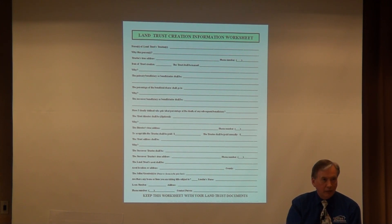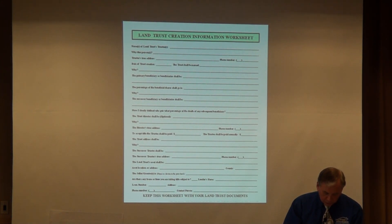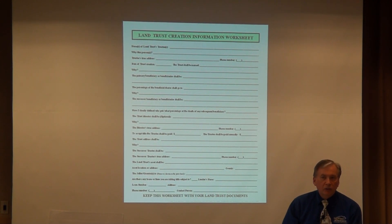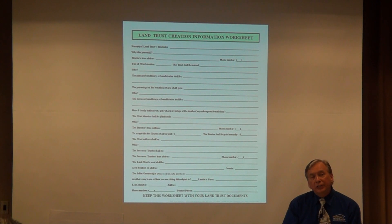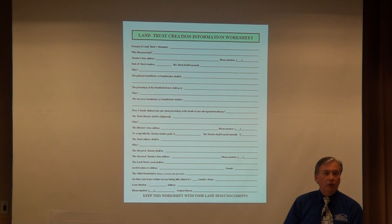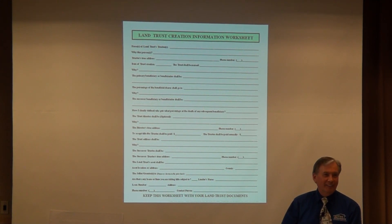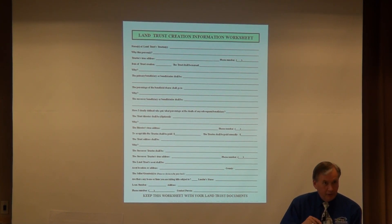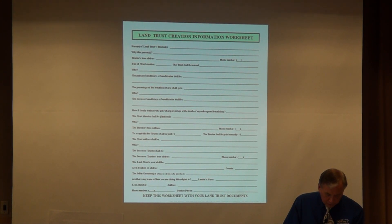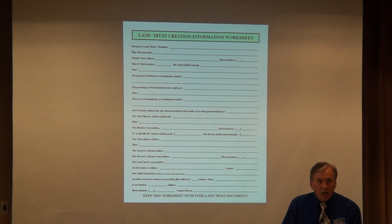The director's true address and telephone number go in the trust. To accept title, the trustee shall be paid — we typically put $100 — and shall be paid annually $100. You could choose a trustee arrangement where you be trustee for them and they be trustee for you: you owe them $100, they owe you $100, and you don't have to write a check. The trust address shall be your management company address, which is not your home address.